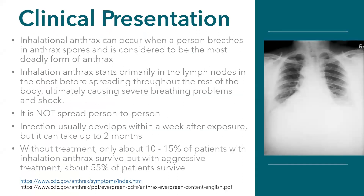The next type of anthrax presentation is inhalational. This is extraordinarily rare and we do not typically see this in the United States. When you do see a case, there would be concern about the risk of domestic terrorism. Inhalation starts by inhaling the spores, which travel to the lymph nodes in the chest and then disseminate throughout the body. This is not spread person to person, even though it can present with pneumonitis. Infection typically occurs about a week after exposure and can be delayed up to two months. It can be very aggressive, causing respiratory failure and sepsis, and even with aggressive treatment, about 45% of individuals still die.